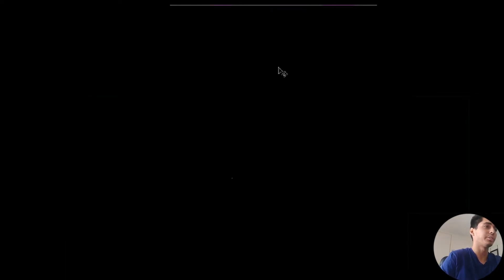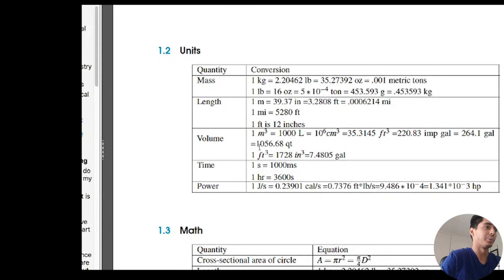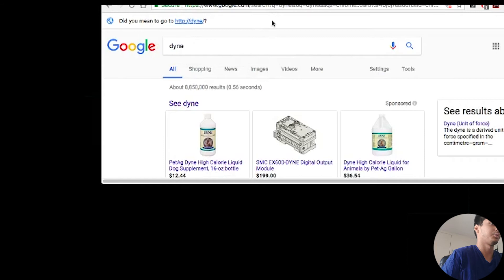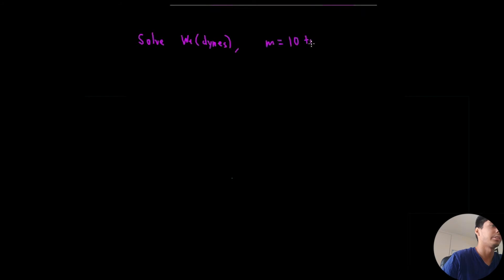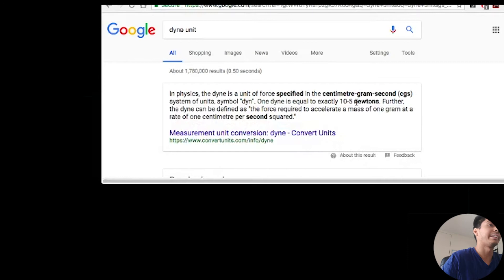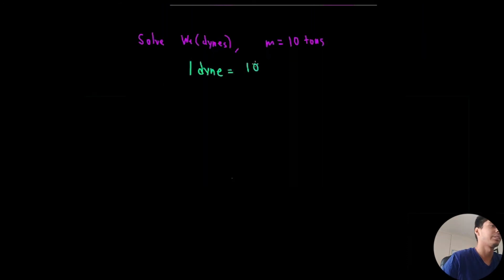Do I even have dynes on my conversion table? I don't. So sorry, I guess I'm going to have to add that. Let's just look up what a dyne is real quick. A dyne is equal to exactly 10 to the negative five newtons. So let's write that down and then I'll add it to the table if you guys haven't already taken a screenshot. We want to solve the weight in dynes. I'm dying to solve this problem. Given M is 10 tons, we just found out that a dyne is 10 to the negative five newtons.